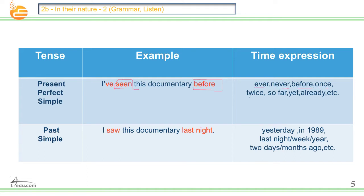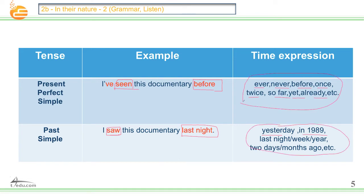Time expressions for present perfect simple: ever, never, before, once, twice, so far, yet, already, etc. For the past simple, we use the past tense form. For example, 'I watched this documentary last night.' 'Last night' is a time expression. Time expressions of the past simple: yesterday, 1989, last night, last week, last year, two days or two months ago, etc. So we have the past participle here and the past form here. The time expressions are the key words everybody — very important.